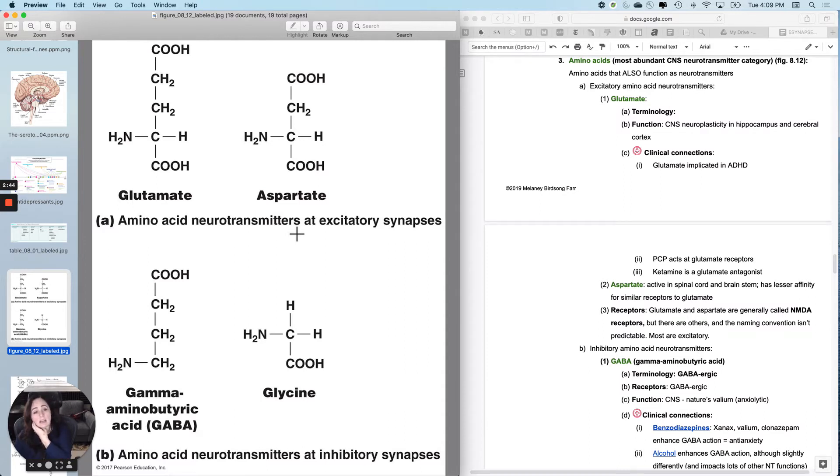The glutamate and aspartate receptors are usually called NMDA receptors, but there are other names and the naming convention isn't very predictable. Those NMDA receptors are almost always excitatory.